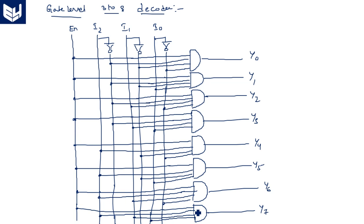I hope you understand how to obtain logic functions and the gate-level diagram from the basic structure. In the next video, I will show how to code this 3-to-8 decoder in different styles — dataflow, behavioral, and structural. Thank you.